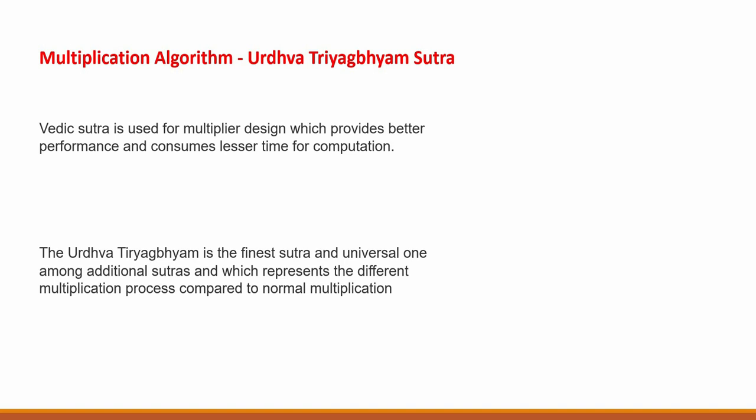The name Urdhva Tiryagbhyam literally means in Sanskrit: Urdhva means vertical and Tiryagbhyam means crosswise. So in this algorithm, we will perform vertical multiplications and crosswise multiplications, which we'll see in a few minutes.